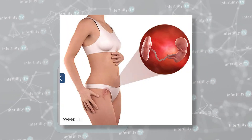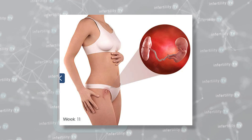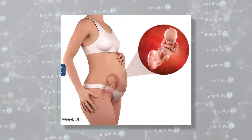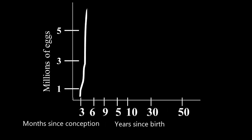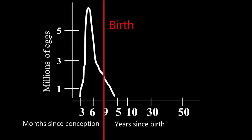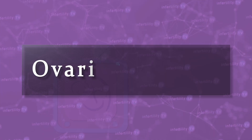In order to understand fertility and menopause, you first need to understand a little about how eggs form in the ovaries. Eggs first appear in the ovaries when the fetus is about 11 to 12 weeks old. The number of eggs increases rapidly until about 28 weeks, at which point new egg production stops and the existing eggs start degenerating. This process of degeneration continues after birth, so the number of eggs remaining in the ovaries is constantly declining.